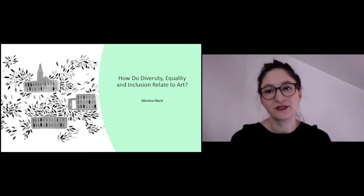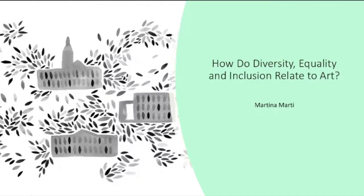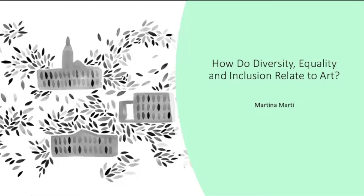The topic of my lecture is how do diversity, equality, and inclusion relate to art. The slide I'm showing has an illustration with three buildings — grey squares that could be a museum, a theatre, and a concert hall. There are small shapes that look a bit like flower petals, arranged within those buildings in neat rows and then also around them in a more organic shape. I'll return to this illustration — I put it here mostly for decorative purposes.